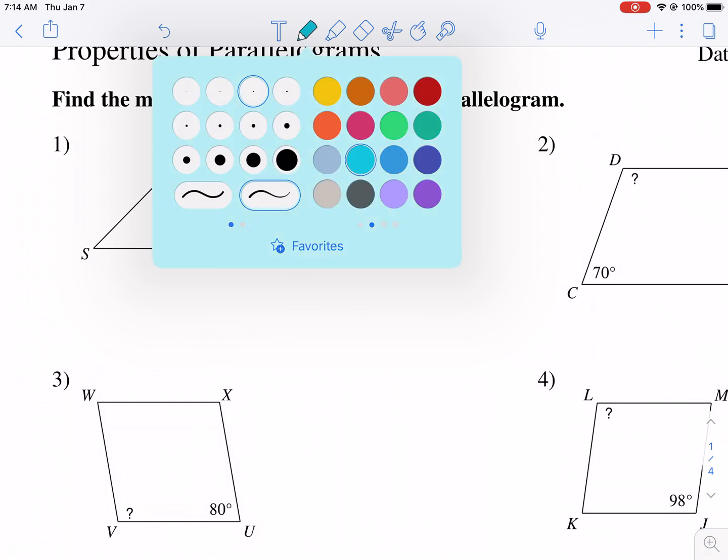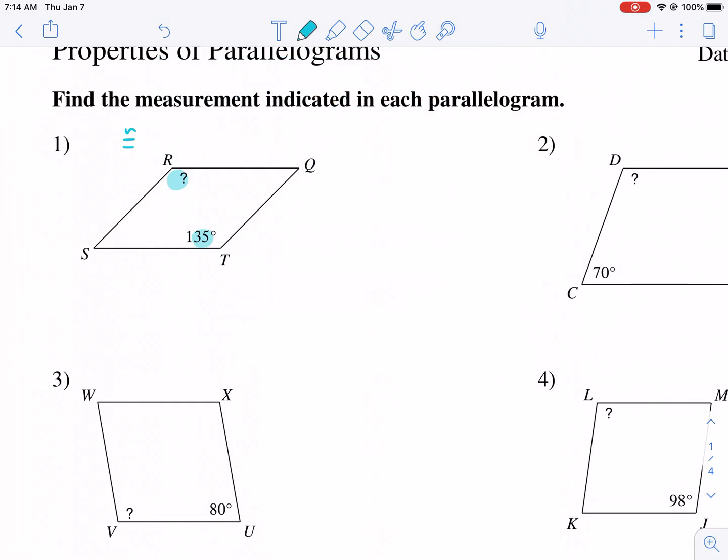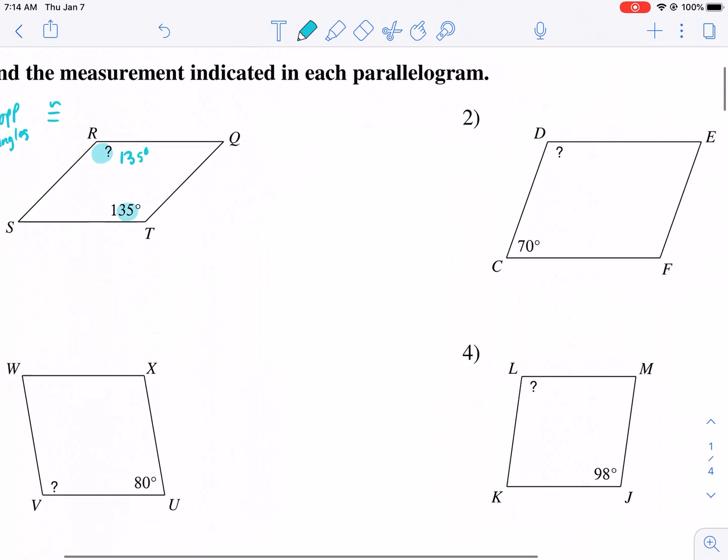Now, one thing you're going to see with parallelograms, one of its properties, is that opposite angles are congruent. So we know that R is going to equal 135, and it's as simple as that.